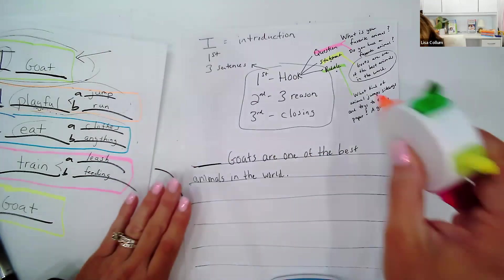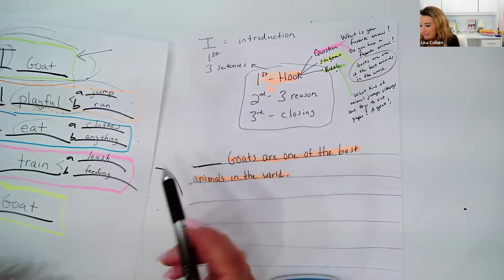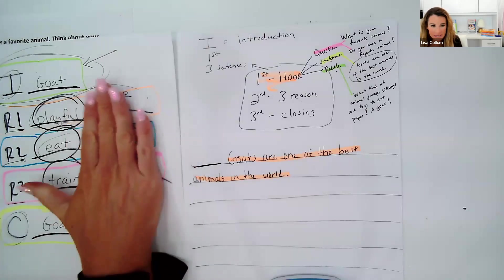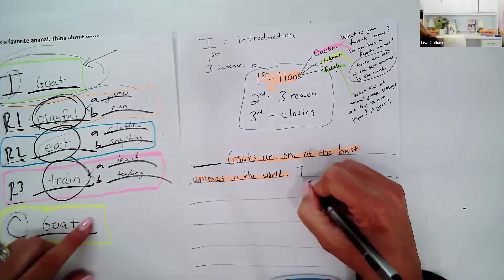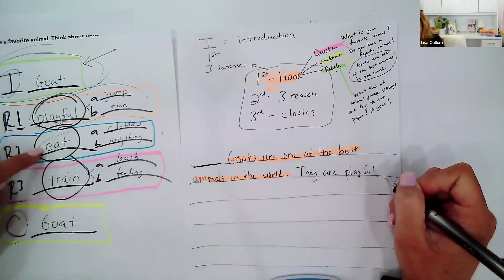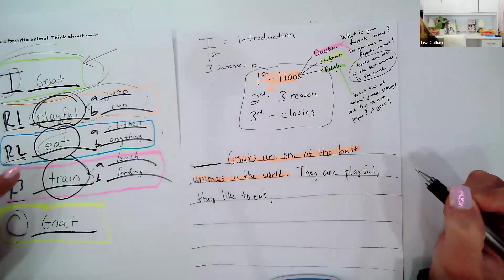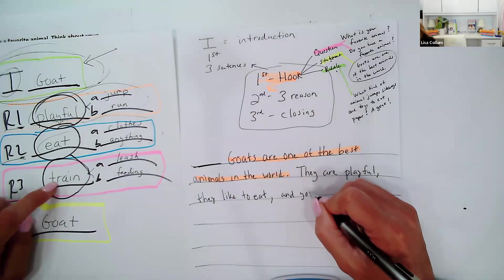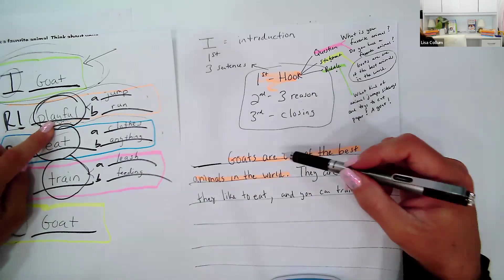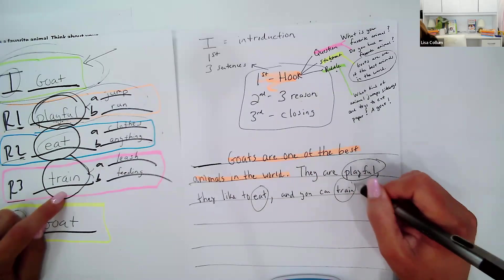I'm starting a paragraph so I have to indent — leave a space here, usually the size of your thumb. My hook is going to be a simple statement about the topic: 'Goats are one of the best animals in the world.' That's the first sentence — highlighted in orange. Now my second sentence is where I name my three reasons. My three reasons are playful, eat, and train. So I say: 'They are playful, they like to eat, and you can train them.' Did I name playful? Yes. Did I name eat? Yes. Did I name train? Yes. I named my three reasons. An easy way to do this is after the first two reasons, put a comma: 'They are playful, comma, they like to eat, comma, and' then your third reason.